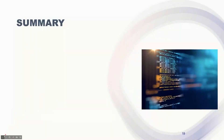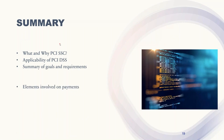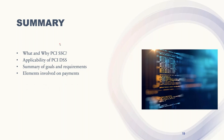In summary, today we learned why PCI SSC exists and its mission, the four pillars, and the applicability of PCI DSS to any entity that stores, transmits, or processes cardholder data. We covered the summary of goals and requirements, the payment elements involved — chip, expiration date, track data — and the major changes from version 3.2.1 to version 4.0.